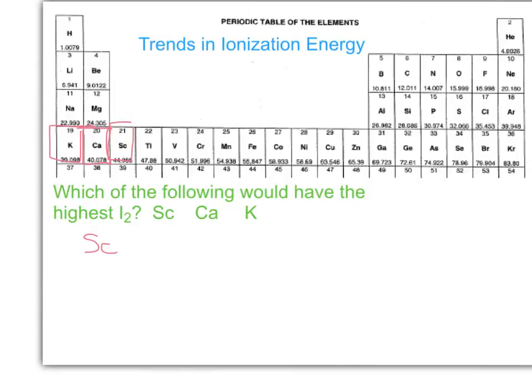So basically for scandium, I1 and I2 are not particularly exceptional. In other words, there's no reason why there would be a big jump. We're not taking an electron from a closed shell configuration.